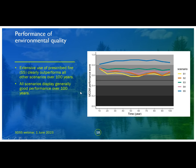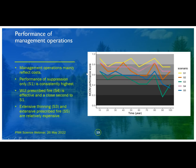Here's the performance of environmental quality. Extensive use of prescribed fire (the blue line) clearly outperforms everybody else over the 100-year period. The other four scenarios bunched together, basically falling roughly in the good range over the 100-year period, but they all performed pretty similarly compared to extensive prescribed fire. Then here's the look at performance of management operations. Management operations mainly reflect costs. The performance of fire suppression was consistently the highest because it's the cheapest thing one could possibly do — but as you saw earlier, it's not that effective in some other respects. Extensive thinning and extensive prescribed fire are relatively expensive, so they perform on the lower end of the range.